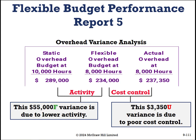However, if we look at what happened — if we had guessed the activity right, these were our actual costs incurred — we actually did worse. We had a $3,350 unfavorable variance due to poor cost control.